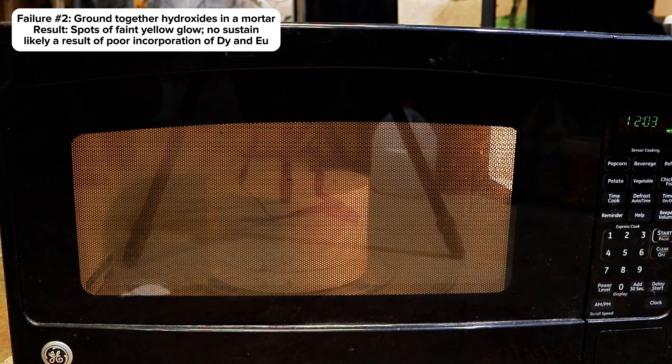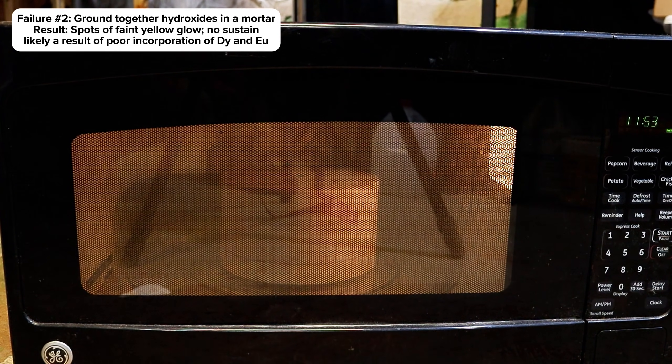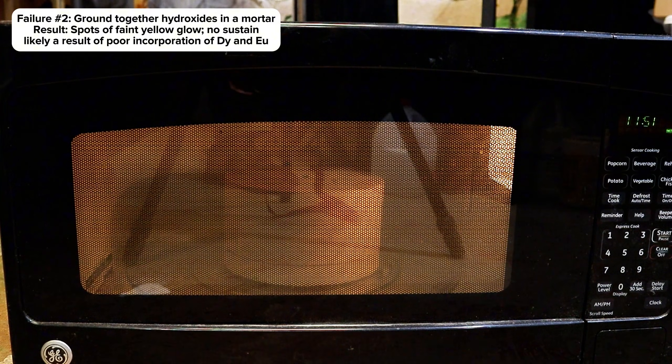The light it produced was also more yellow rather than the desired green, and didn't really sustain at all once the light source was removed. I figured that the non-uniform luminescence was a result of the doping agents not really being able to effectively combine with the strontium aluminate from simply grinding the 4 together.